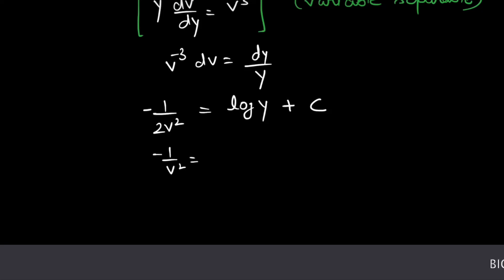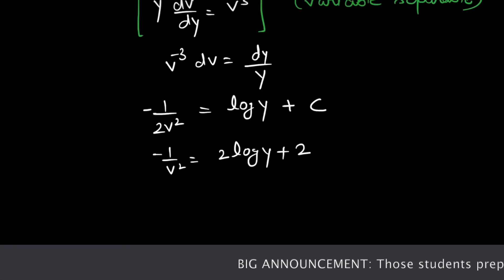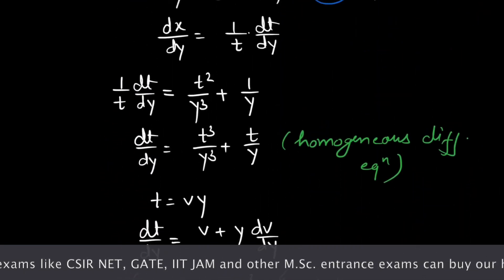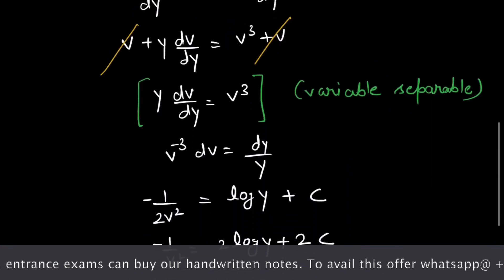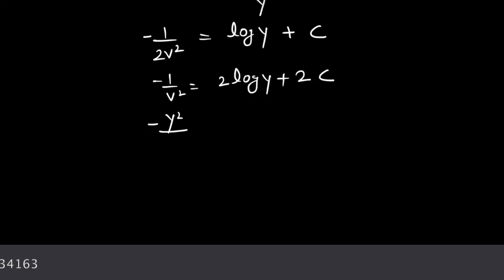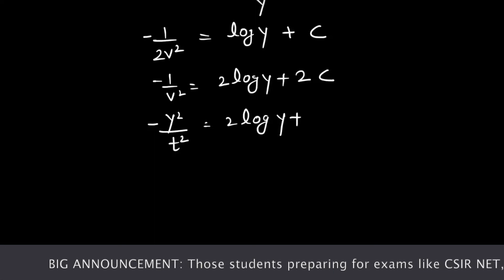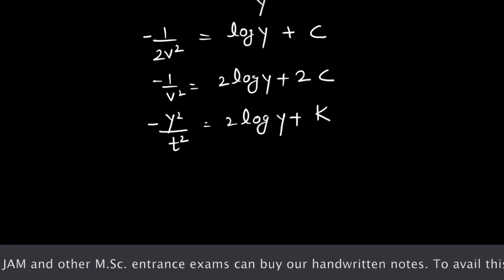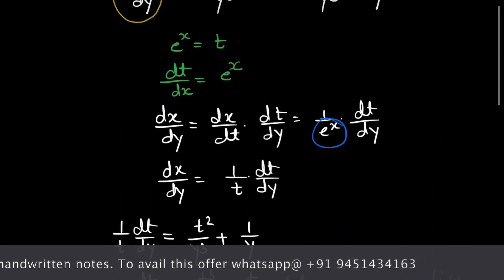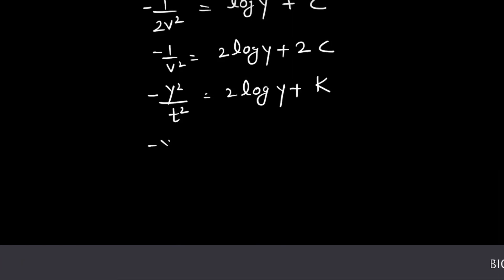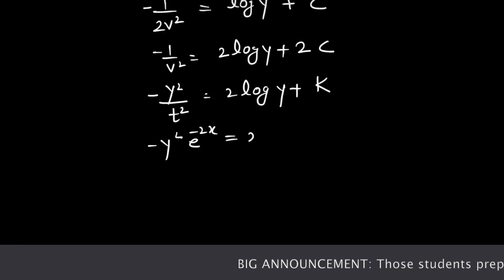Multiplying 2 on both sides gives minus 1 over v² equals 2 log y plus 2c. From the substitution t equals vy, v equals t over y. Substituting back, minus y² over t² equals 2 log y plus constant k. Putting t equals e raised to power x gives minus y² times e raised to power minus 2x equals 2 log y plus k.